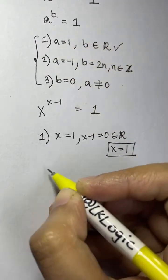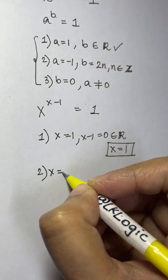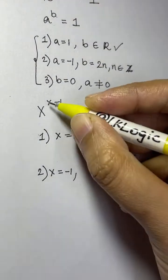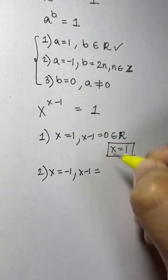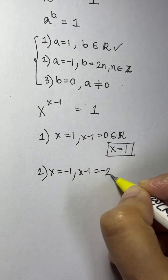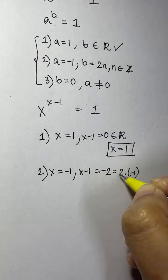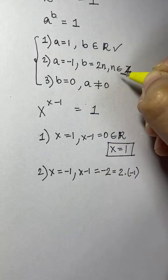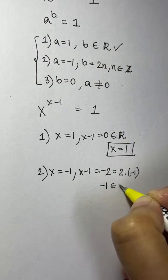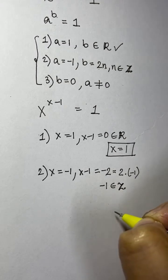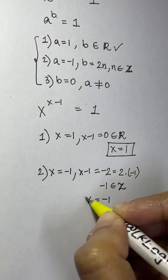Now the second option: a is negative 1, so x equals negative 1. What is x minus 1? Negative 1 minus 1 gives negative 2. And negative 2 can be written as 2 times negative 1, which is in the form 2n where n is an integer — and negative 1 belongs to the integers. Therefore, x equals negative 1 is also a solution.